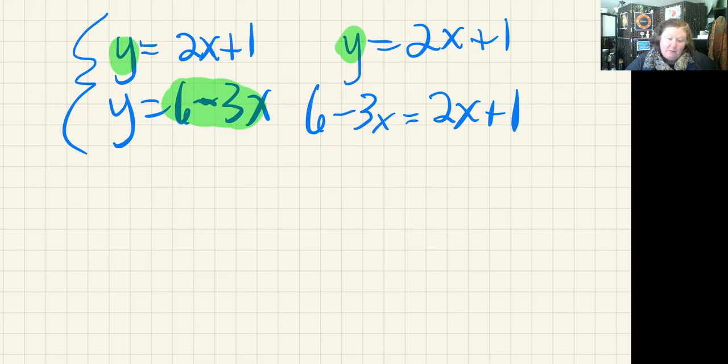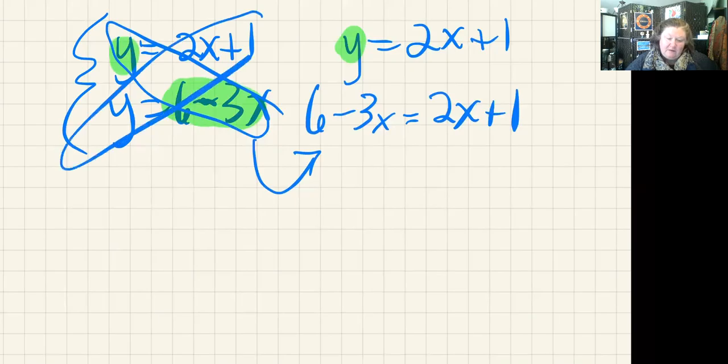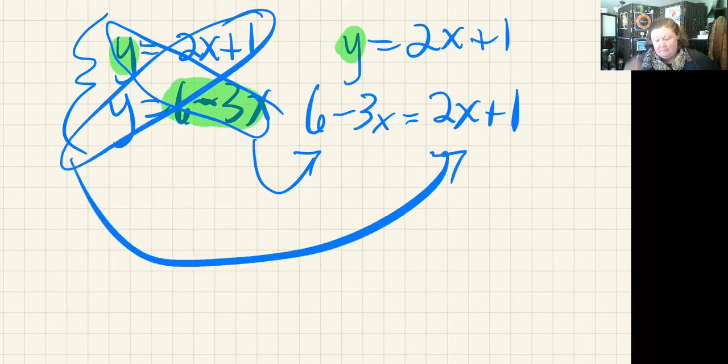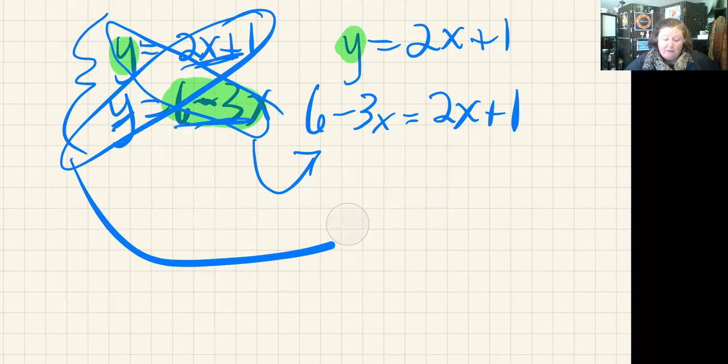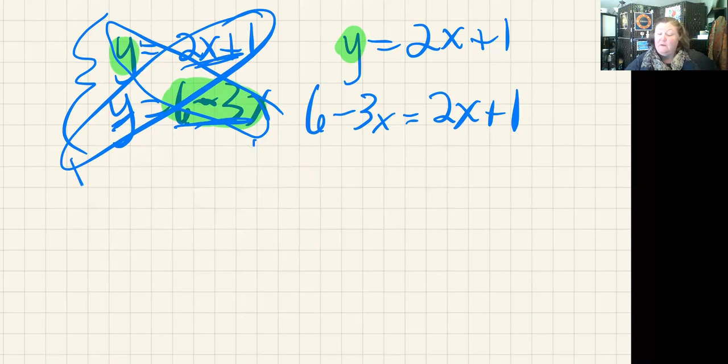We could put either these two together in this place or these two together in this place, because this y would be equal to 2x + 1 as well. We're saying they're really all equal to each other, and in order to find that, we now want to solve for x.